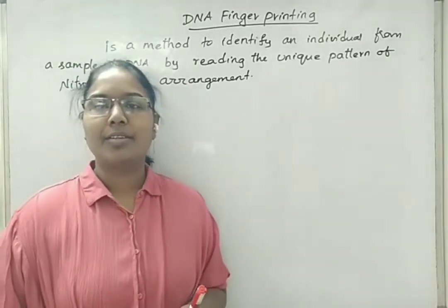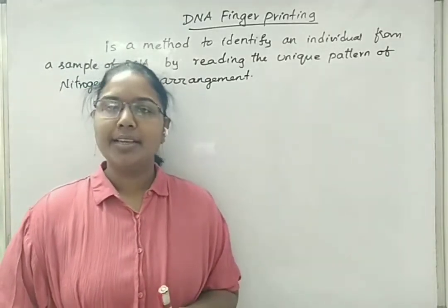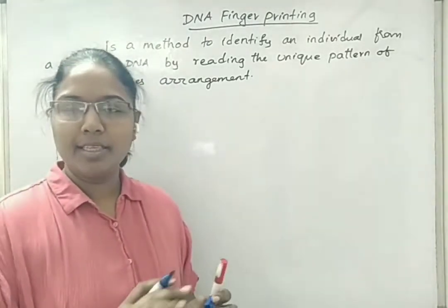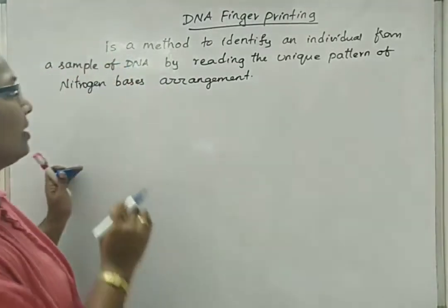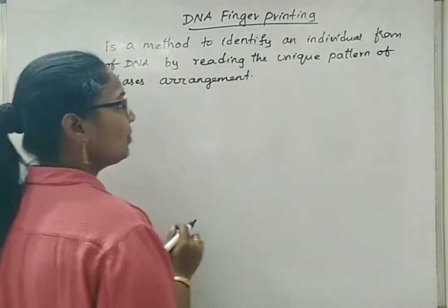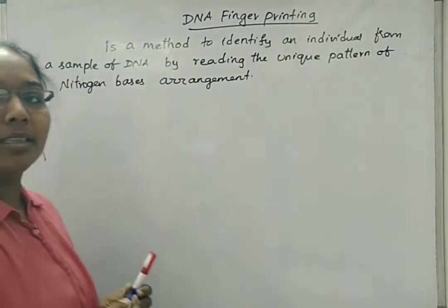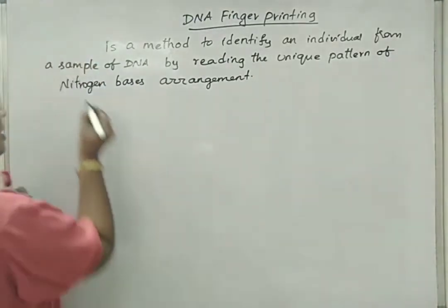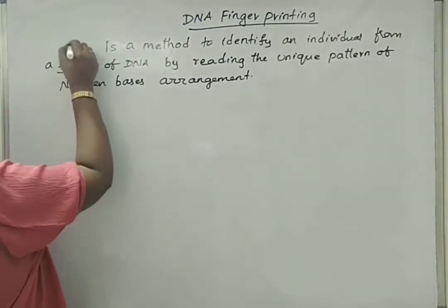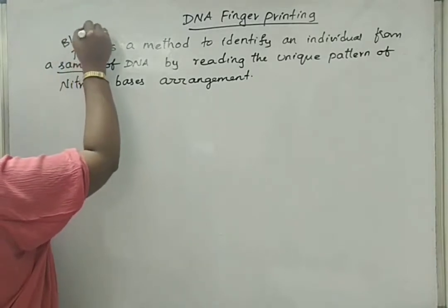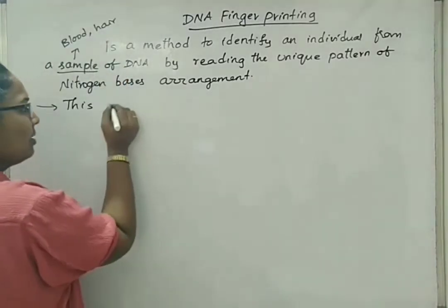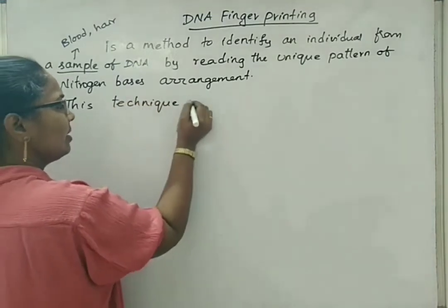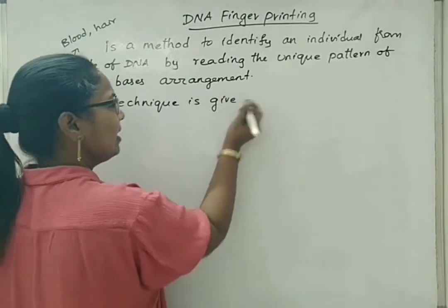We will start with a new topic: DNA fingerprinting. In a simple sentence, it is a method to identify an individual from a sample of DNA by reading the unique pattern of arrangement of nitrogen bases. The sample can be a blood sample or a hair. This method or technique was given by Alec Jeffreys.